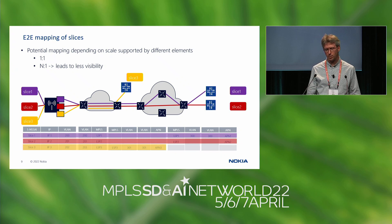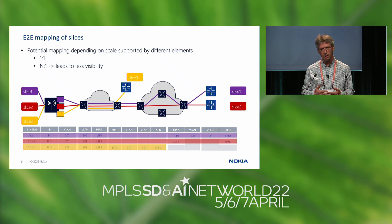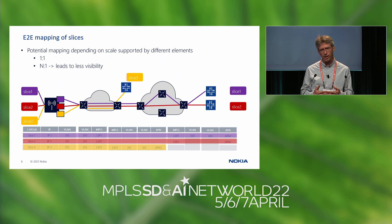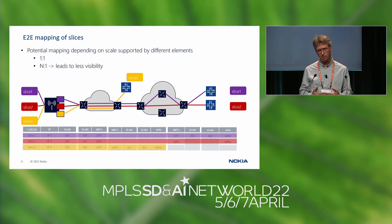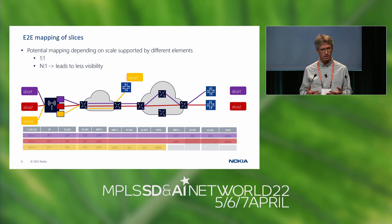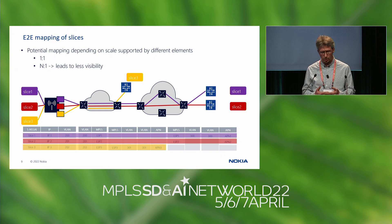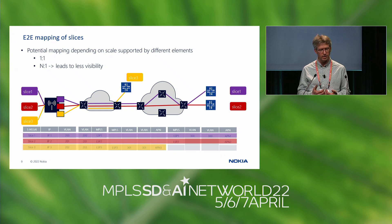This mapping exercise is depicted on the slide. With a small number of slices, you can do it one-to-one. With many slices, you may need to aggregate in a many-to-one fashion, because some RAN equipment may be limited in the number of VLANs it can handle, reducing visibility across the individual slices.